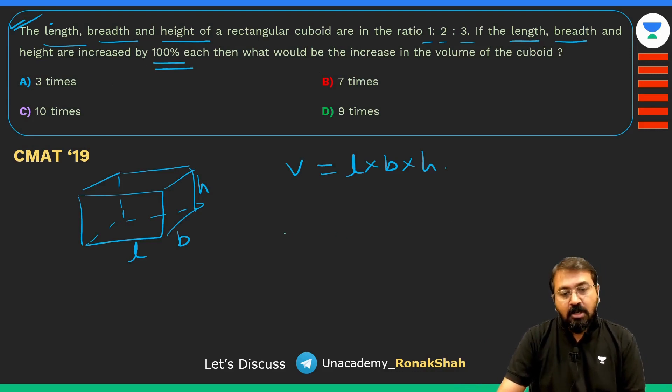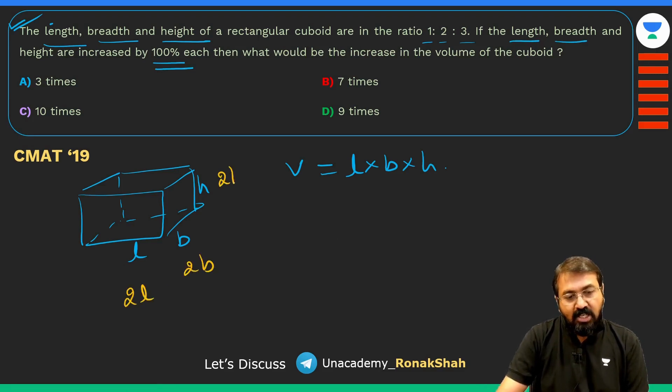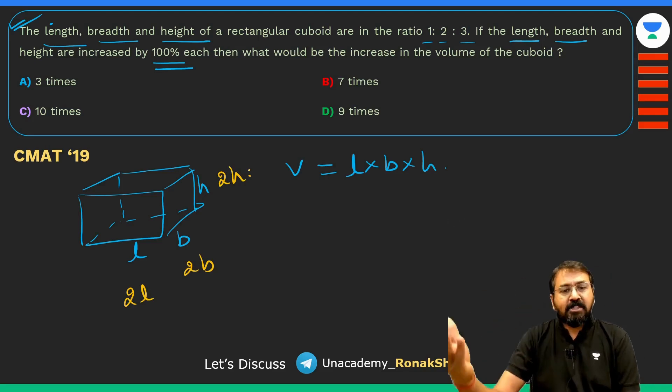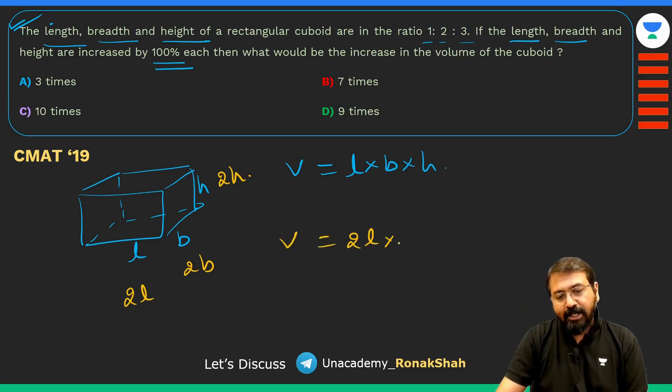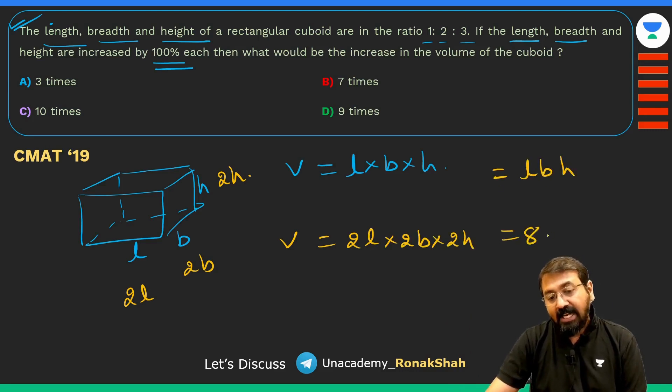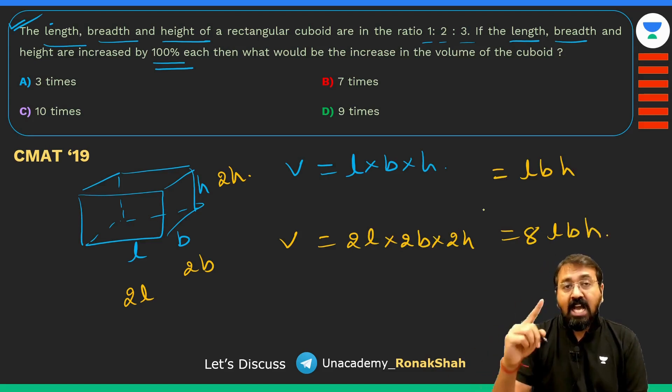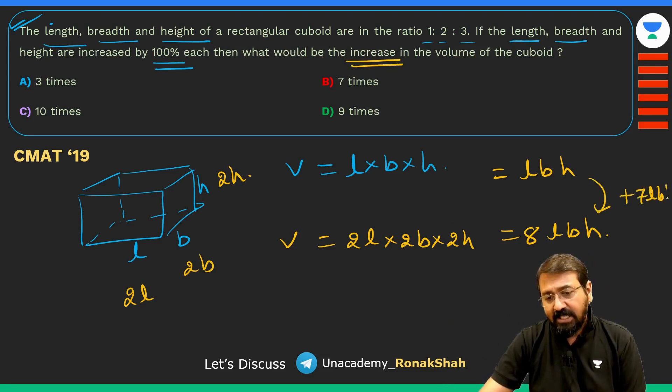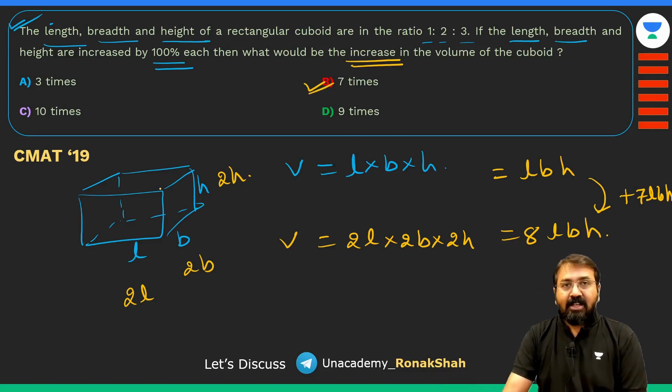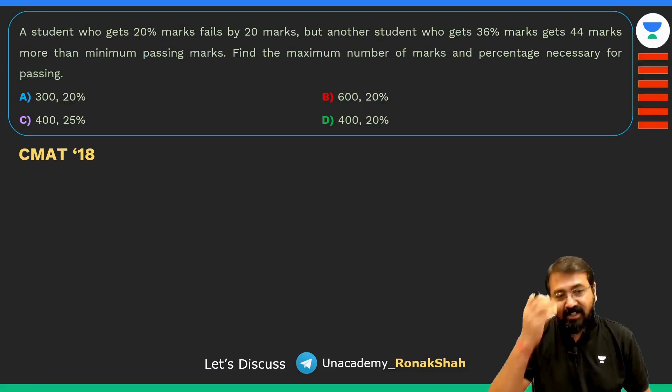If length, breadth and height are increased by 100% each, matlab now my new length will become 2L. Let me just write it over here: 2L, 2B and 2H. When we increase a value by 100% it becomes double. So my new volume will be 2L into 2B into 2H. Earlier volume was LBH, now it has become 8 LBH. They are not asking how many times it has become, they are asking what is the increase. Can I say it has increased by 7 times LBH, so we'll tick mark 7 times. Luckily there is no option as 8 times, otherwise many students end up marking 8 times.